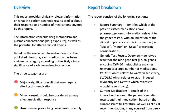The first page provides an overview of the report and a breakdown of what is included in each section. Please remember that the pharmacogenomics test looks at how your body handles medication based on your personal genetic makeup. It doesn't contain any ancestry information and it also doesn't contain any disease risk information. There is a traffic light system of alerts.